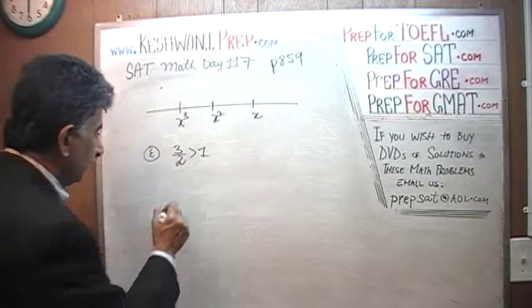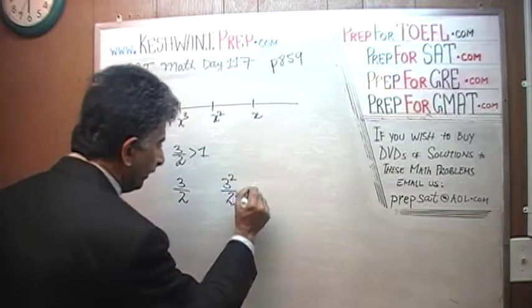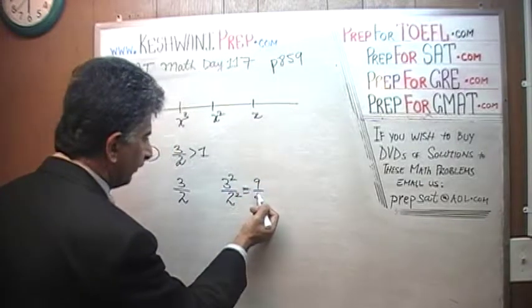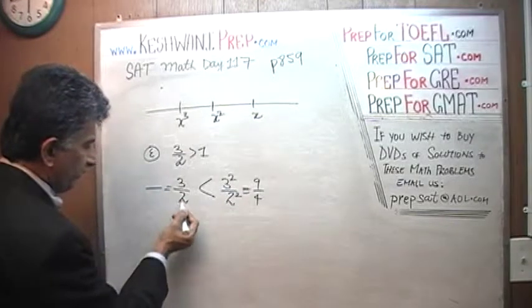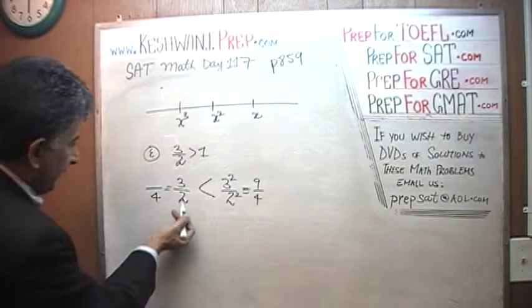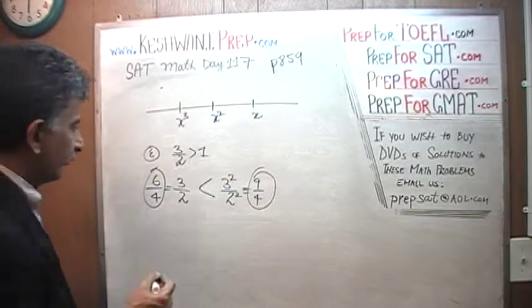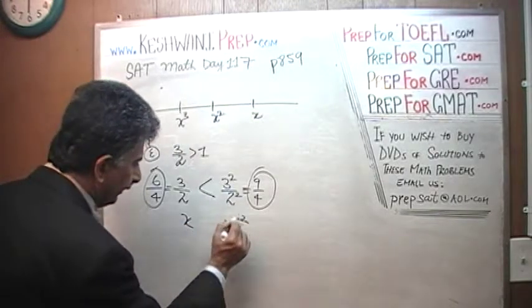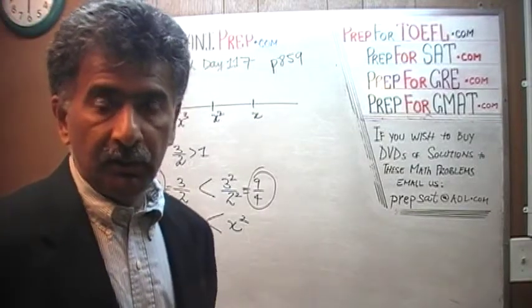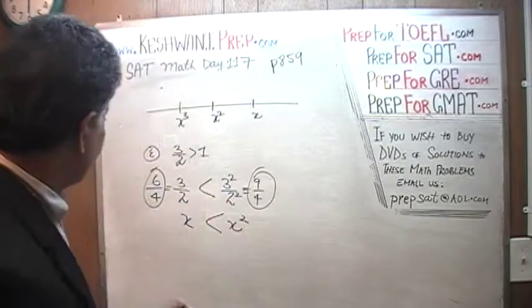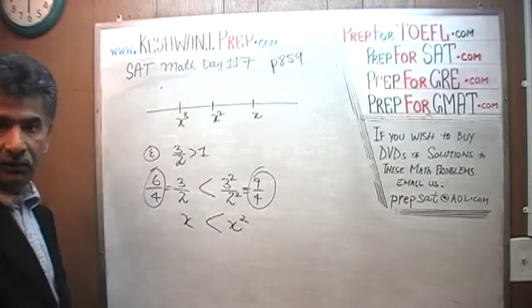If you square a number that is more than 1, it's going to be more than the original number. 3 divided by 2, when you square it, you get 3 squared over 2 squared, which is 9 over 4. And 9 over 4 is actually more than 3 halves. So x squared here is more than x as we would expect. We are told that x squared is less than x. This is not it.